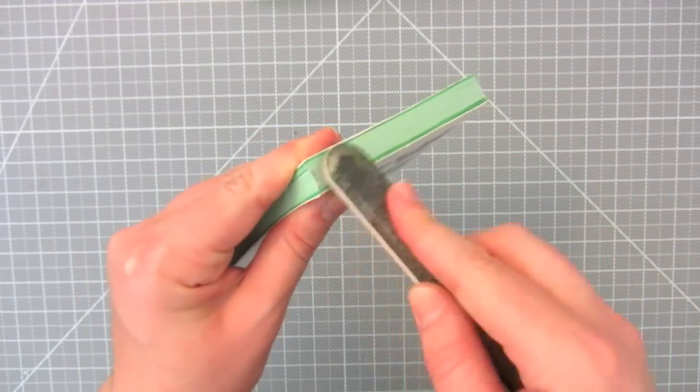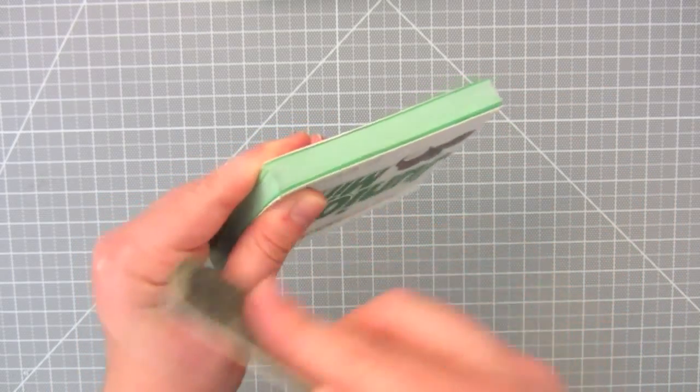If the edge doesn't come out perfectly smooth, use a file to sand the uneven parts.